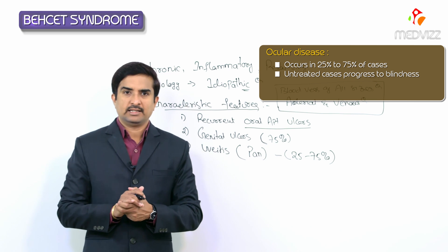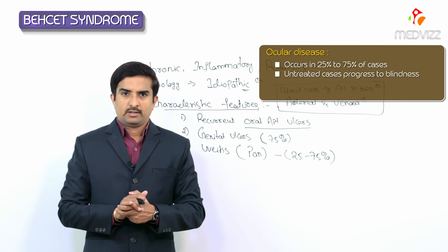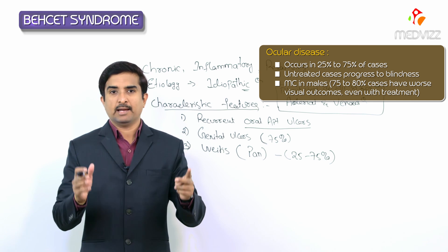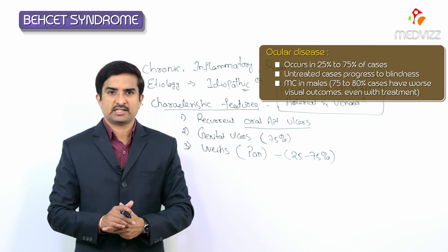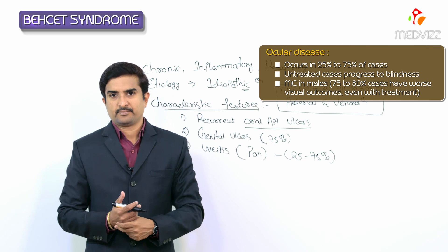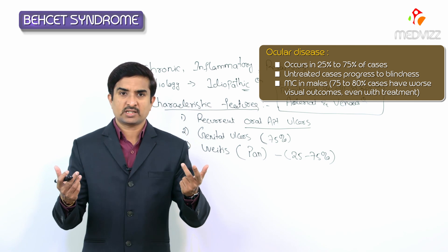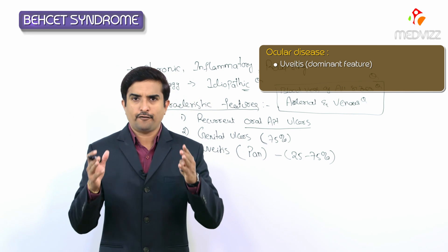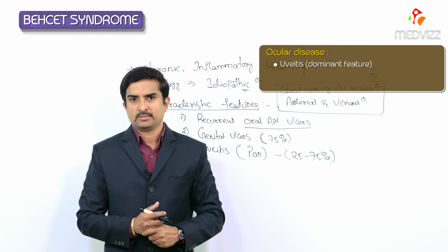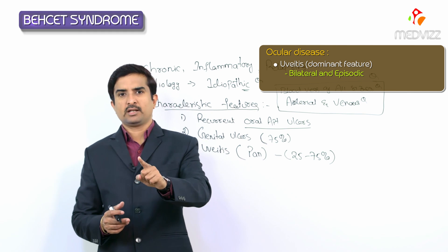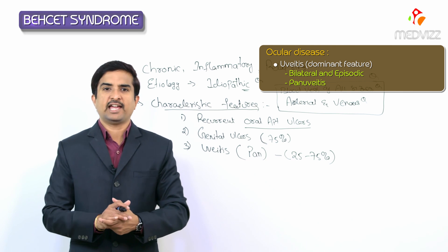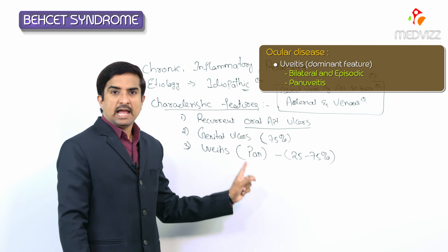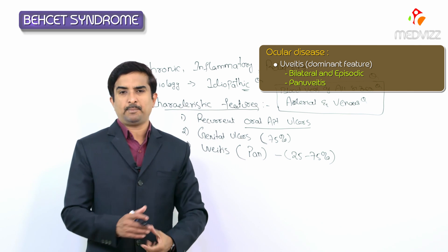Male patients with Behçet's are more likely to develop eye disease, with approximately 75 to 80% developing uveitis, and they have worse visual outcomes even with treatment. The uveitis is often the dominant feature of Behçet's syndrome — it is typically bilateral and episodic, involving the entire uveal tract (pan uveitis), and may not resolve completely between episodes.